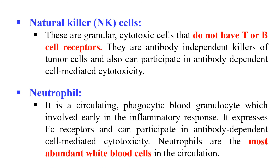Next, Neutrophils. These are phagocytic white blood cells and are the most abundant cells in the blood, circulating constantly. They are also responsible for the inflammatory response, and they are the first cells to respond against an infection whenever there is one.